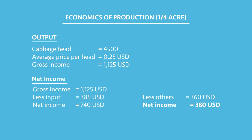Now we come to the net income. The gross income is $1,125. Less the input of $385, your net income is $740. If you are doing irrigation, you also subtract $360, giving you a net income of $380.